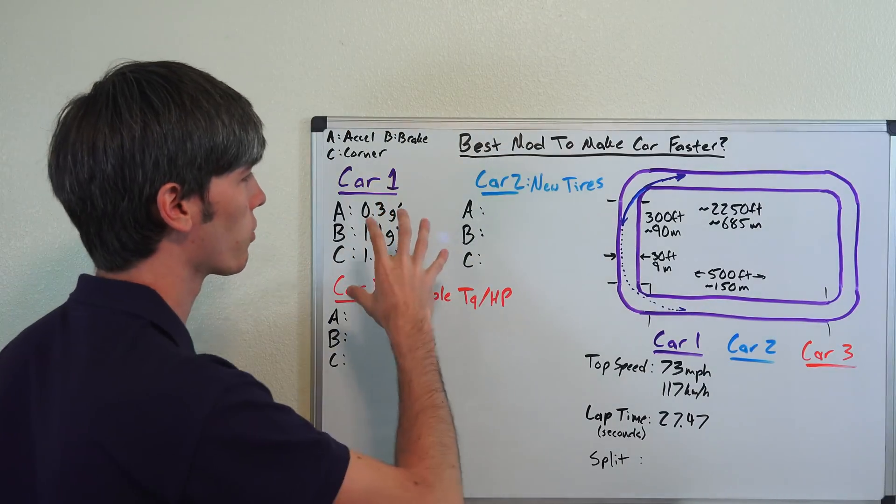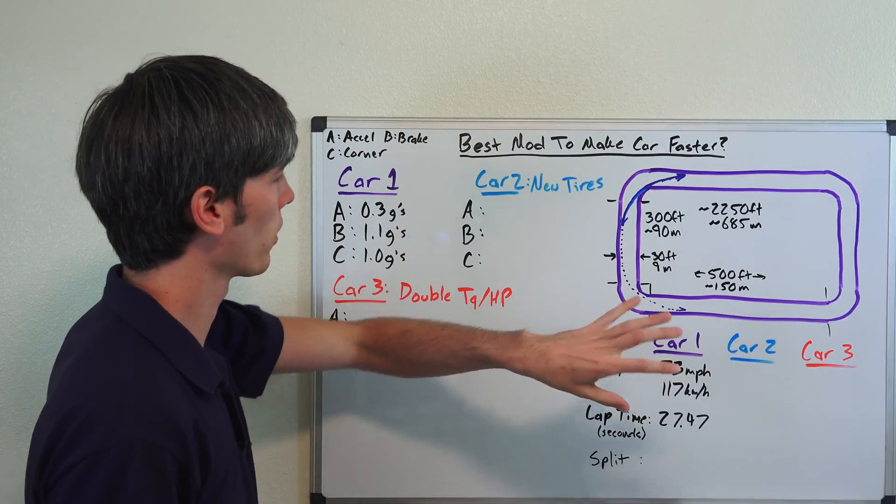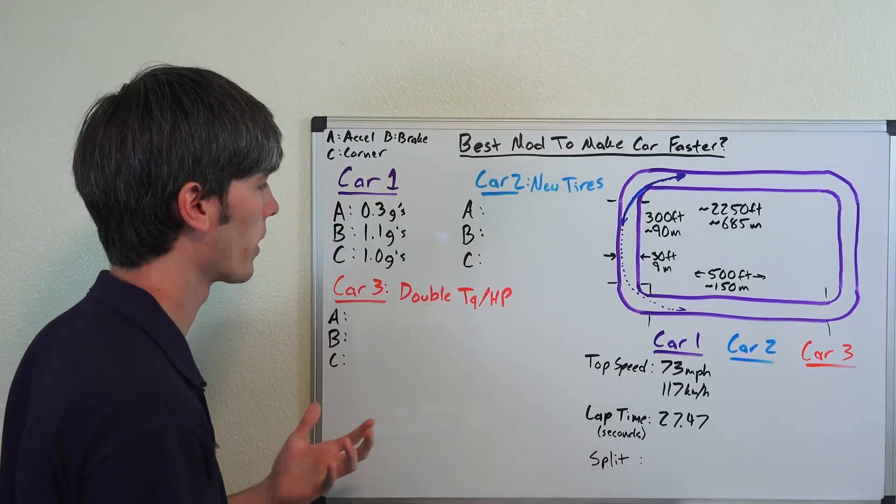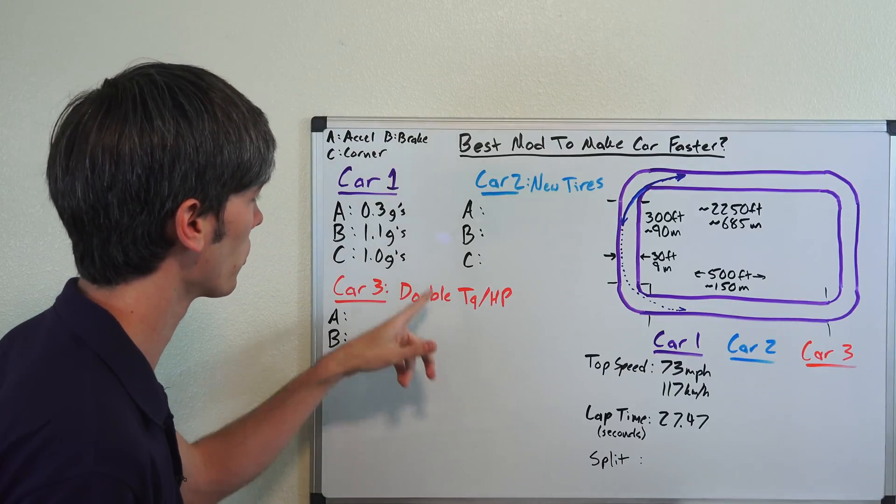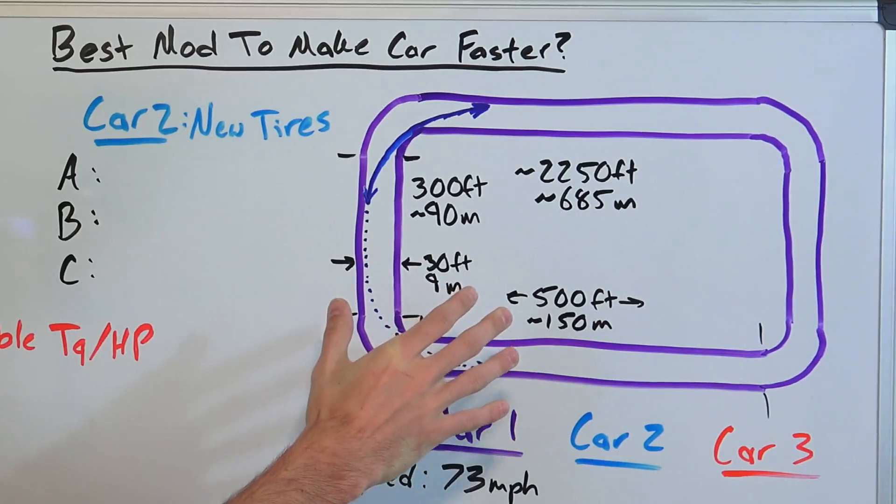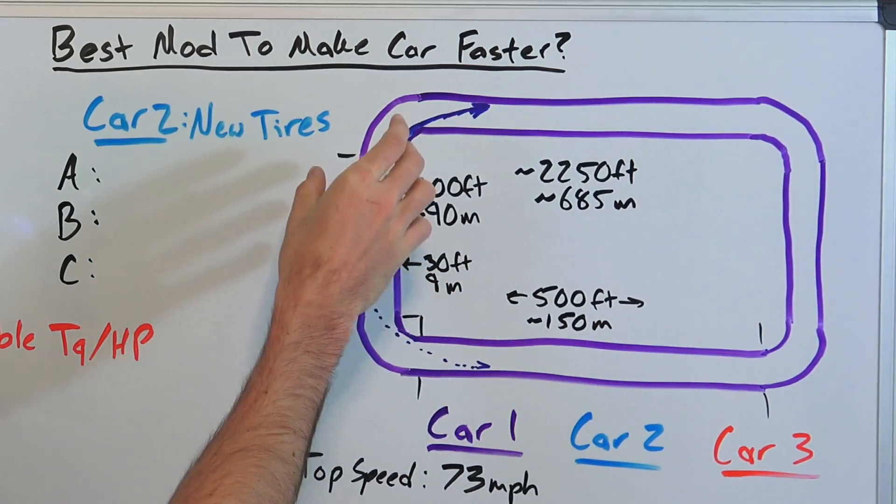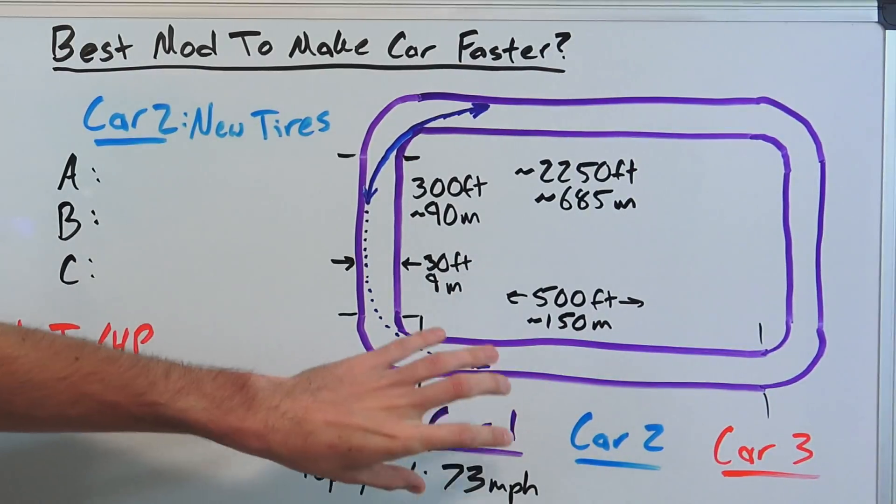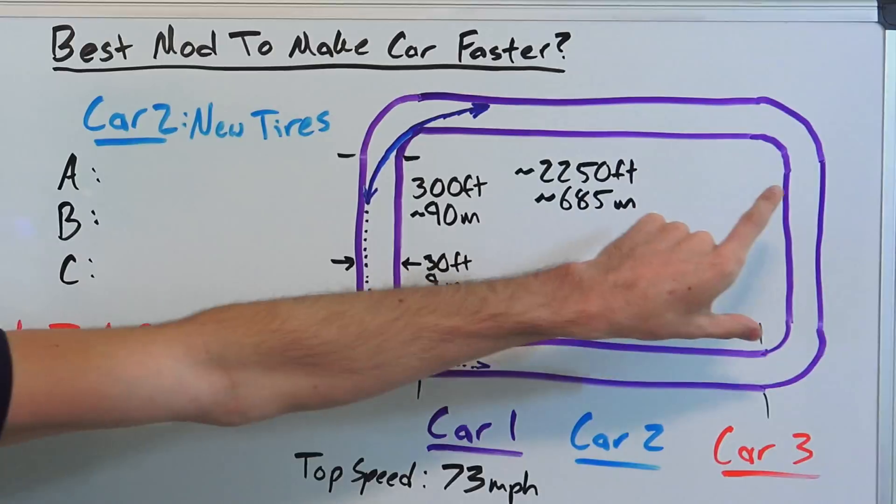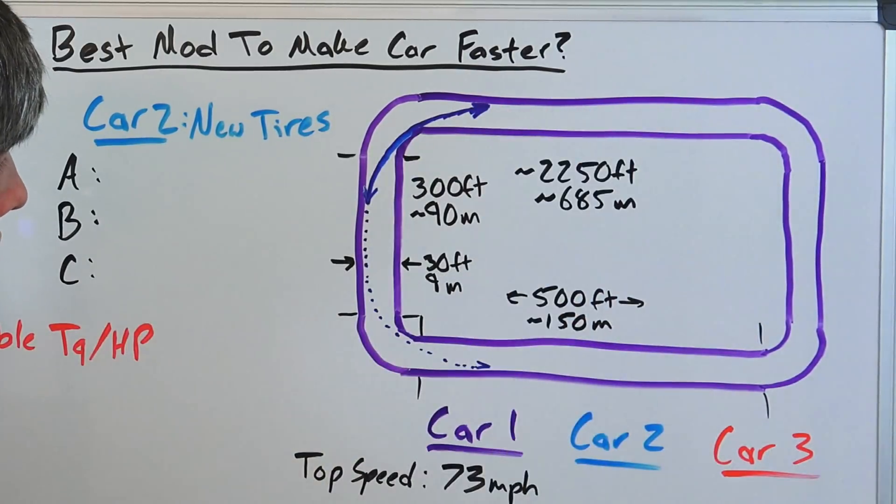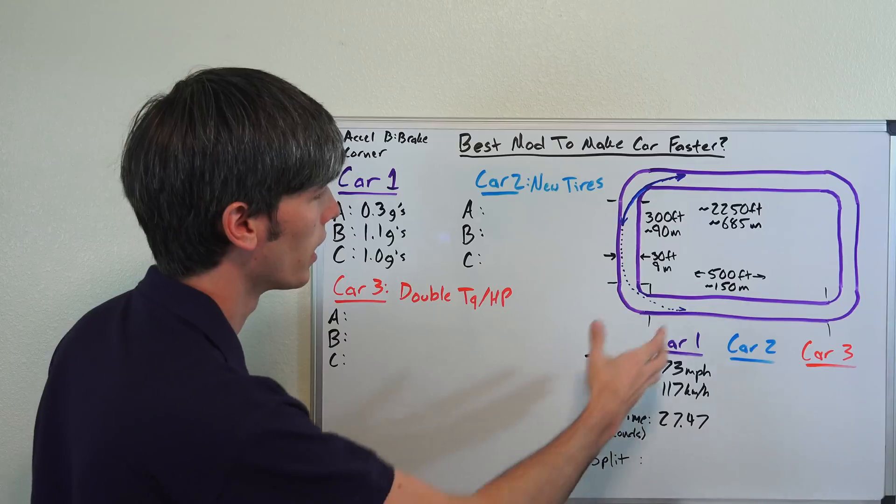Essentially what we've got is three different cars going around this track. We're going to see what lap time they post. One is going to have new tires, one is going to have double the horsepower and double the torque of the original car, and we'll see which one is fastest. This track here has two straights on each side, each one of these is going to be 300 feet or about 90 meters.